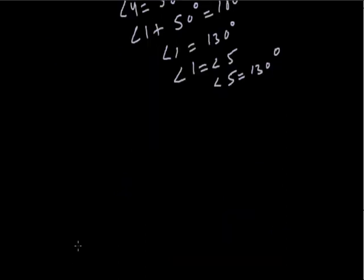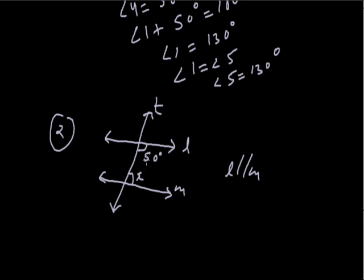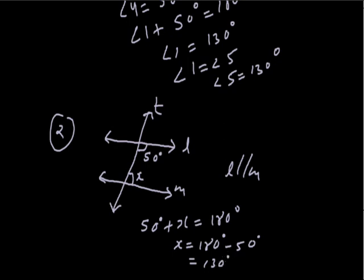In the next problem, line L is parallel to M with transversal T. One angle is 50° and we need to find x. These two angles form co-interior angles, so 50° + x = 180°. Therefore x = 180° − 50° = 130°.